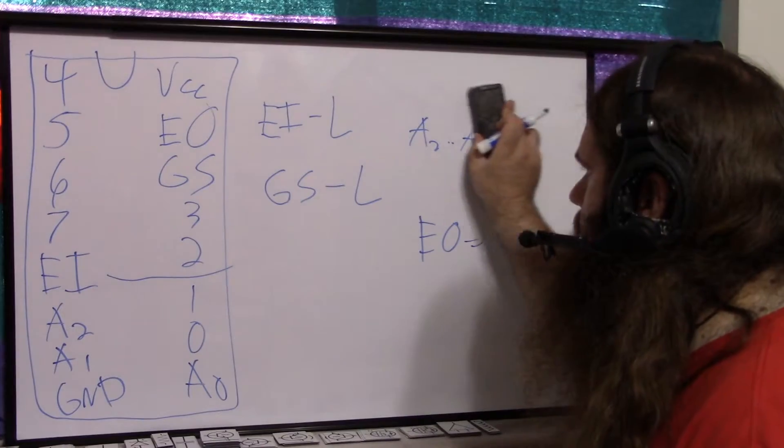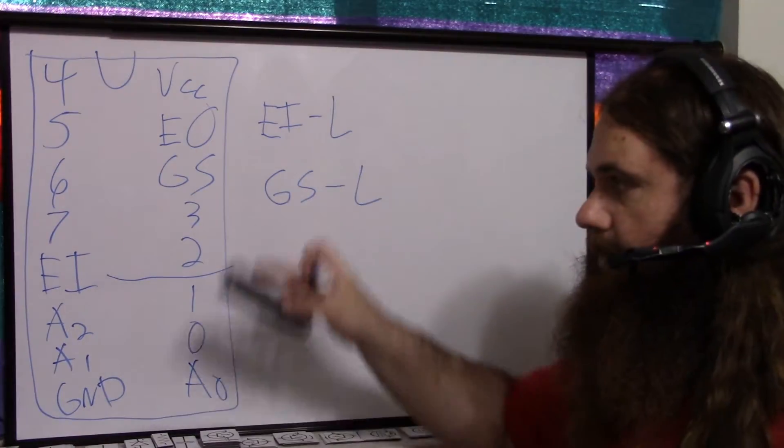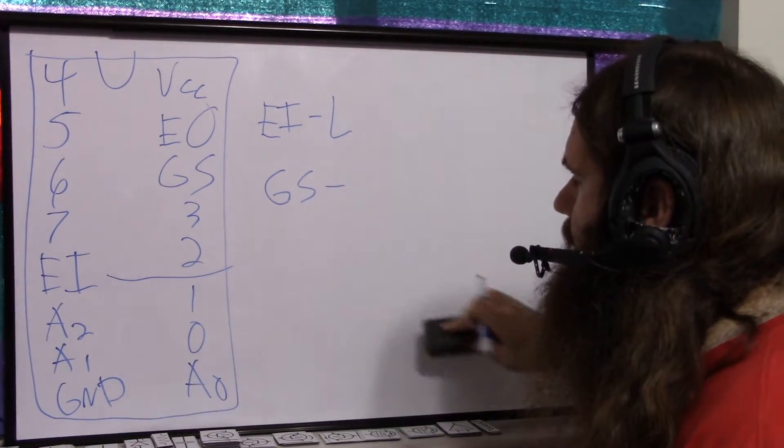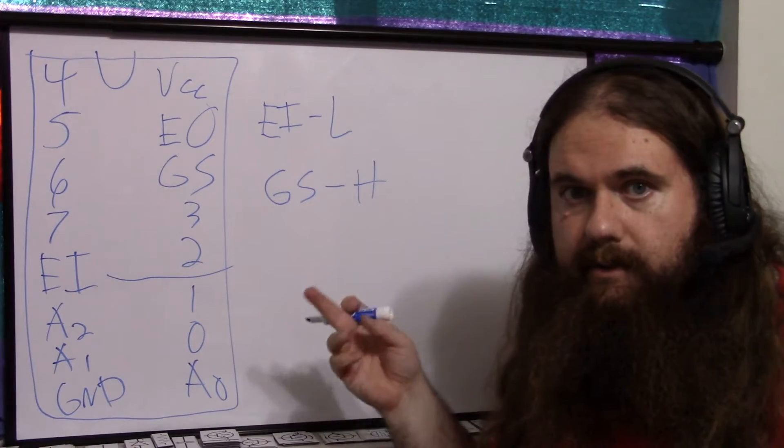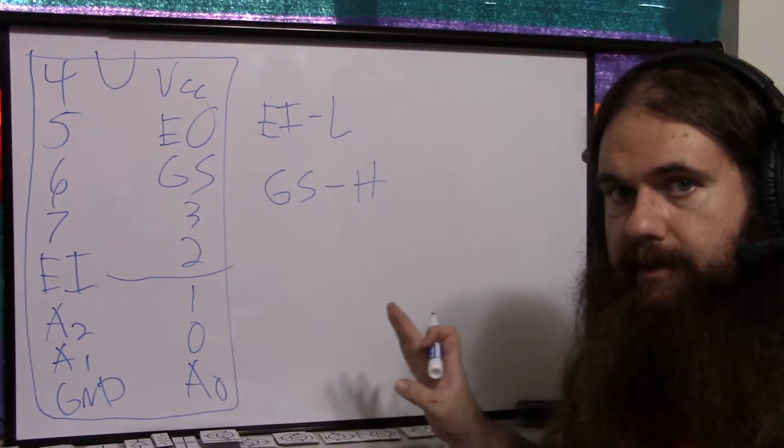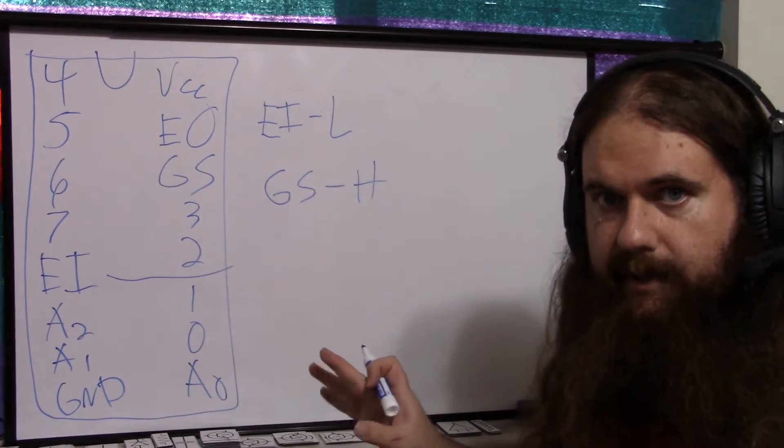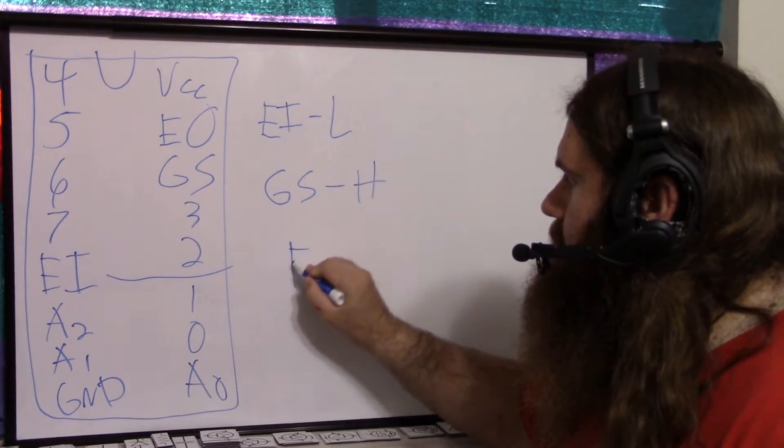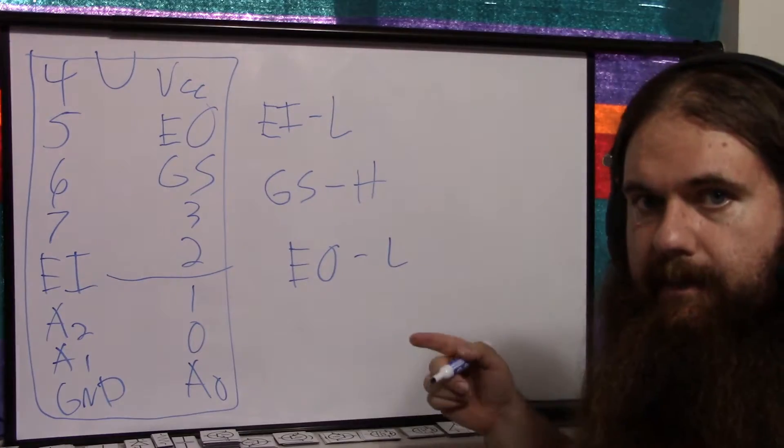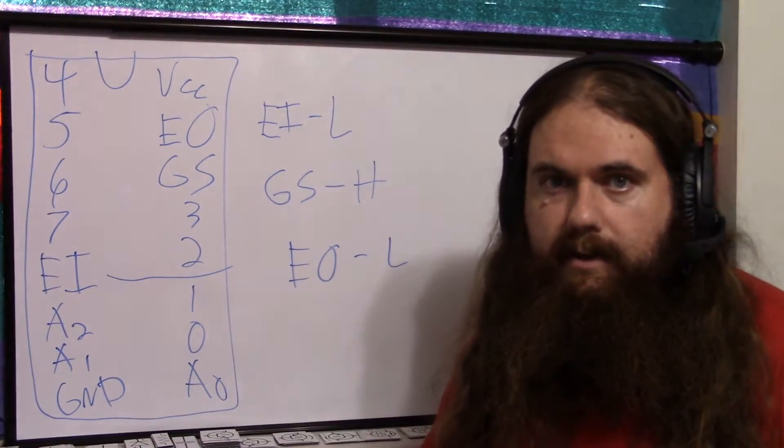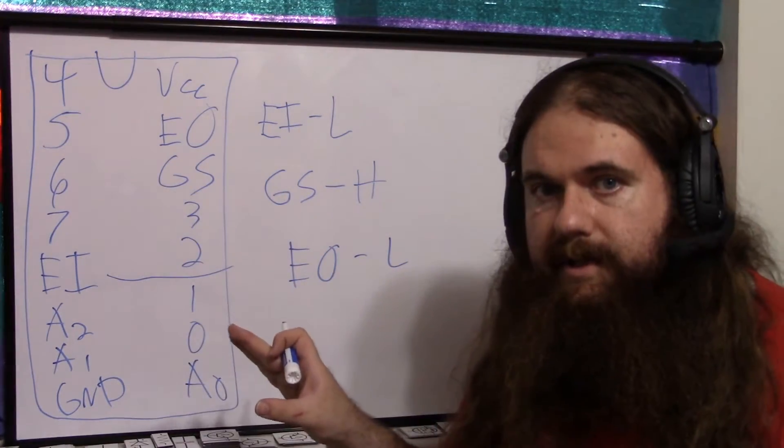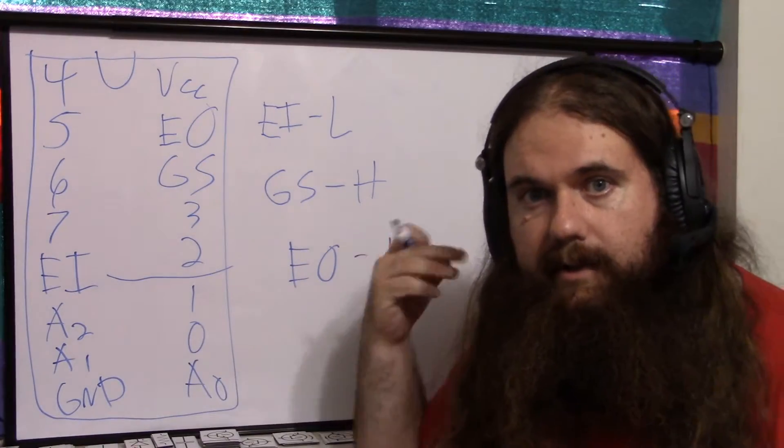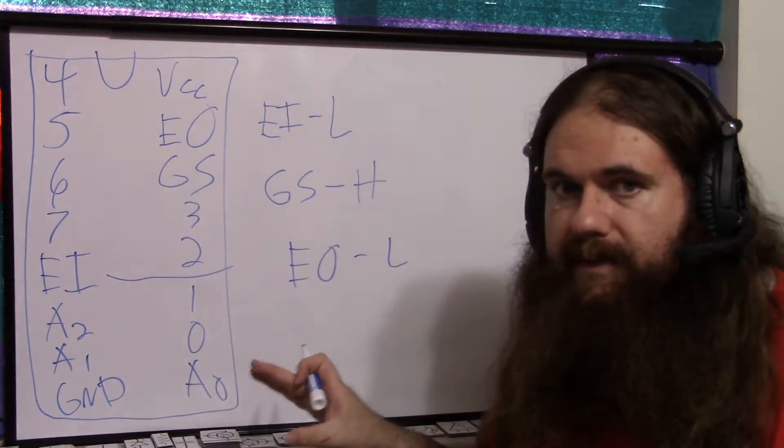But if none of them are low, if none of the inputs are on, then GS is going to be high to tell you, you're supposed to plug into GS and say, okay, none of these are on, this chip is not giving me anything useful. But EO will be low to tell the next chip, you should be on and checking your input. So the highest priority chip says, nothing's on for me, next one, give it a shot. And it's going to do the same thing.